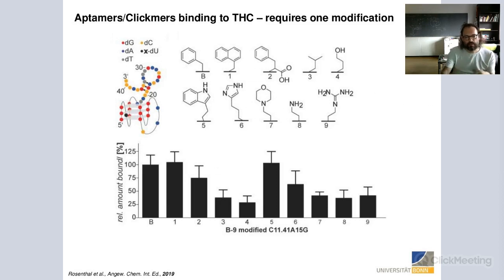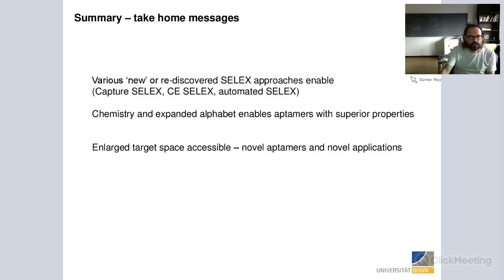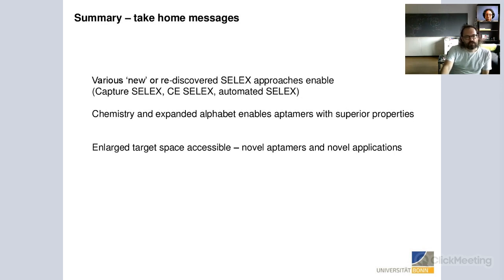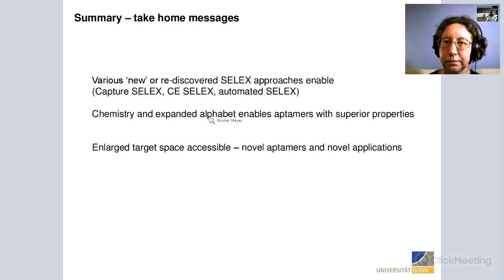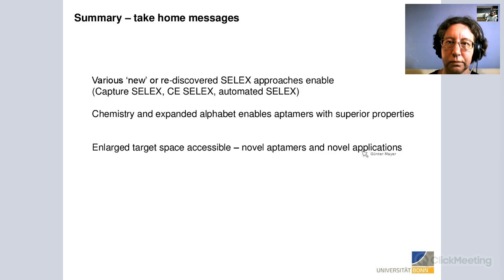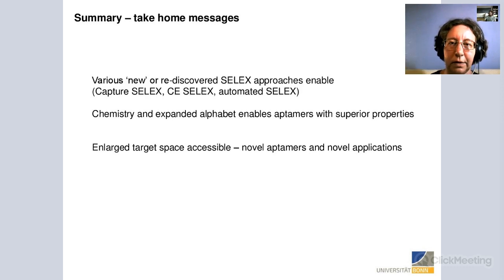To conclude — there are various new or rediscovered approaches that help generate aptamers for specific targets, especially small molecules: CaptureSELEX, automated selection, chemistry and expanded alphabet-enabled aptamers. These expanded alphabet approaches allow access to tutorial binding properties and enlarge the target space accessible for aptamer selection, enabling aptamers for targets where normal approaches fail. Thank you for your attention and I'm happy to answer your questions.